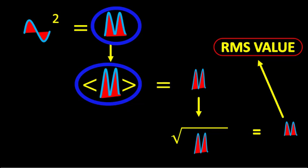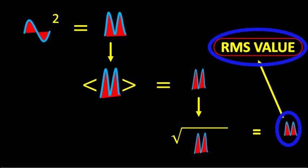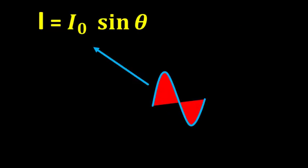Finally, we take the square root of the resultant, which cancels out the effect of squaring in step one. Finally, we are left with the root mean square value, or RMS value, of AC current.